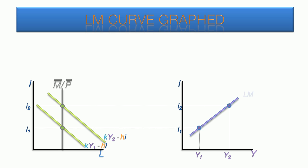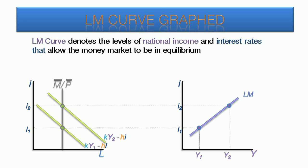These two sample points are all we need to draw the LM curve. It denotes the levels of national income and interest rates that allow the money market to be in equilibrium.